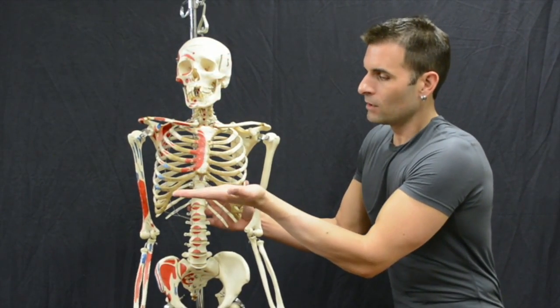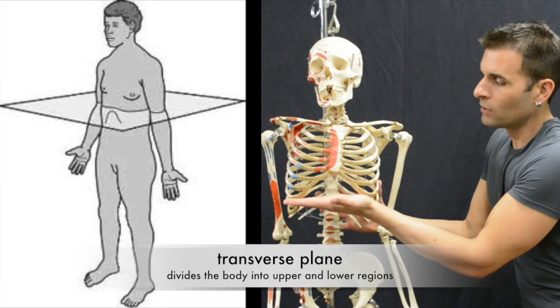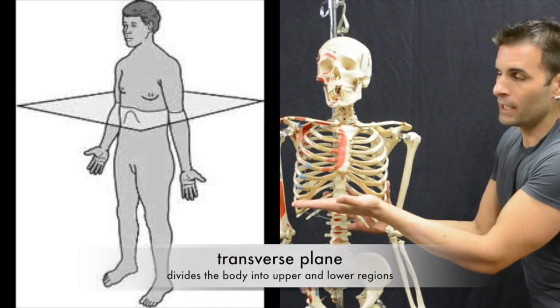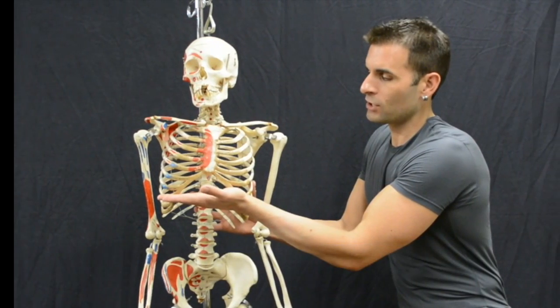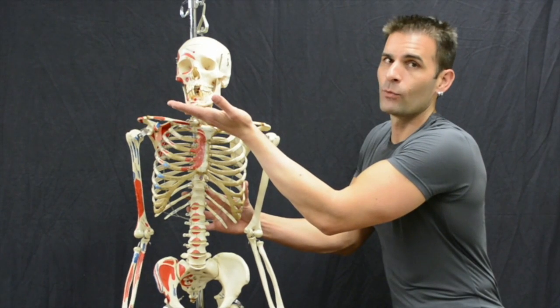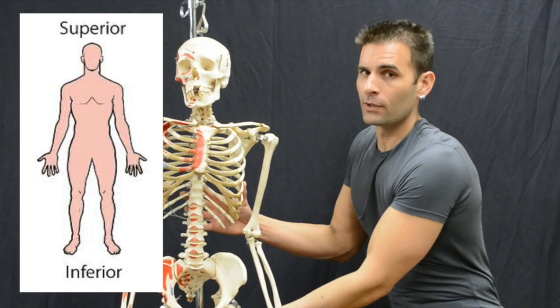If we were to take a plane, a section straight across and dividing the body into upper and lower halves, this is called a transverse section and that creates an upper half which is known as superior and a lower half which is known as inferior.